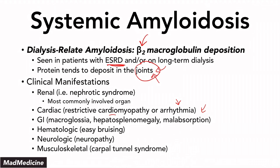Dialysis-related beta-2 macroglobulin amyloidosis is very high yield — most people forget about this type of deposition. Commit it to memory. Don't miss a vignette where a patient has renal failure or renal issues along with other systemic issues or joint problems, because you need to consider dialysis-related amyloidosis.